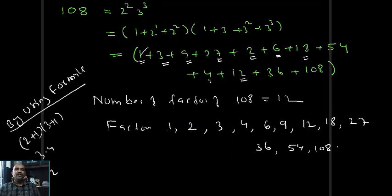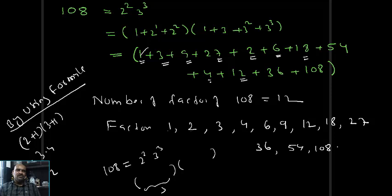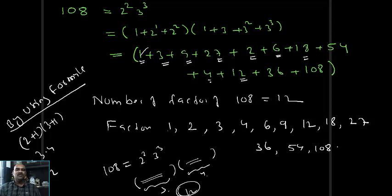For 108: 2^2 means the first bracket contains 2+1=3 terms. 3^3 means the second bracket contains 3+1=4 terms. So 3 × 4 = 12 factors. This confirms that the exponent plus 1 gives the number of terms in each bracket, and multiplying them gives the total number of factors.